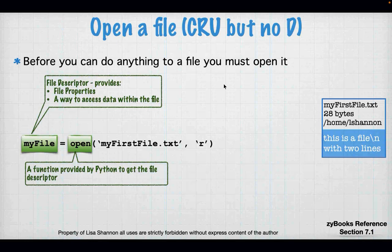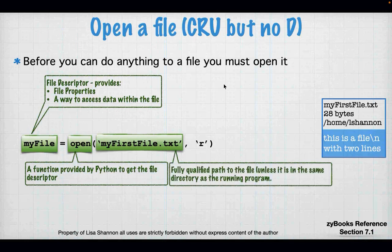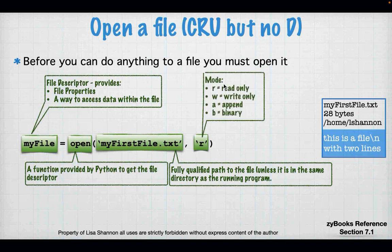If you're in PyCharm you don't need to worry about it too much, but in the wider programming world you need to provide the fully qualified path to the file. Then 'r' is a mode. There are four modes: read, write, append, and binary. We're going to talk about read and write mostly in this lecture. Those modes can be combined — you can open a file for reading and writing, or for appending, which means you're just going to add to the bottom of it.